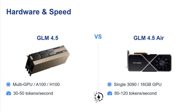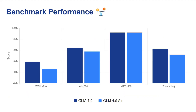In terms of hardware and speed, GLM 4.5 would require training-grade GPUs like the A100 or H100 for inferencing, and the token speed is a little slower at 30 to 50 tokens per second. GLM 4.5 Air can work on consumer-grade GPUs and is quite fast at 80 to 120 tokens per second. So the size is massively reduced and the speed has also taken a massive shift.